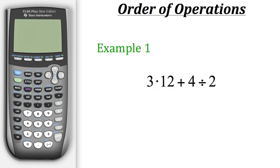So to start off, going from left to right, we'll start with the multiplication of 3 times 12, and then do the 4 divided by 2. And after those operations have been done, then we could finally do our addition, which would be 36 plus 2, giving us a value of 38.